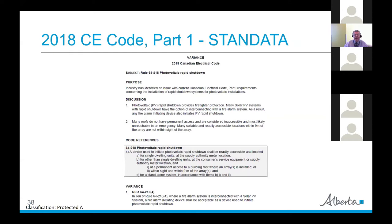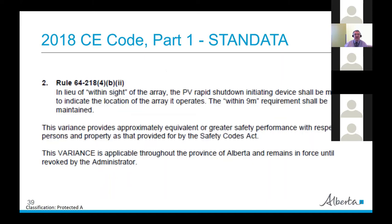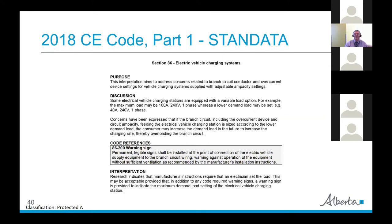We have variance 664 on rapid shutdown. If there's a fire alarm system that can be interconnected with the solar system, the fire alarm initiating device — such as a manual pull station — should be acceptable as a device used to initiate rapid shutdown. This protects firefighters when they're coming in to fight the fire. Also, in lieu of the 'within sight of the array' requirement, the rapid shutdown initiating device can be marked to indicate the location of the array it operates, but it still has to be within nine metres.